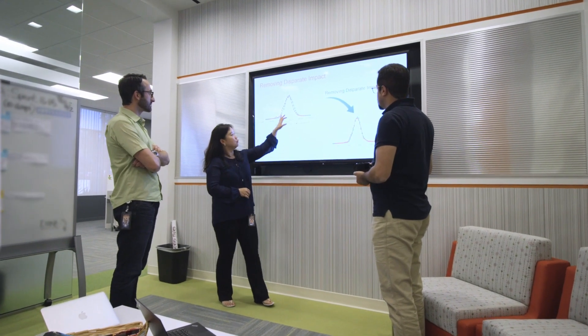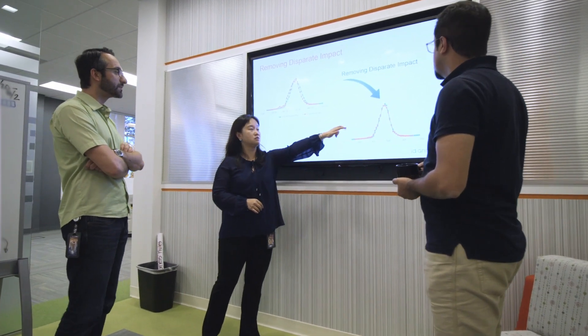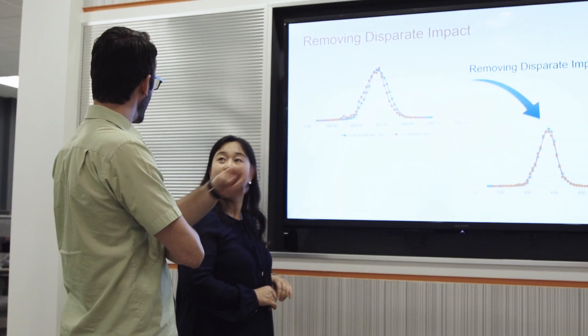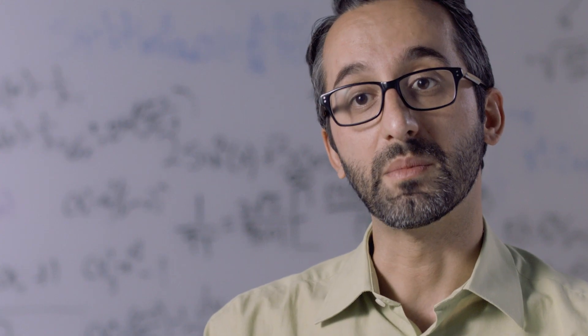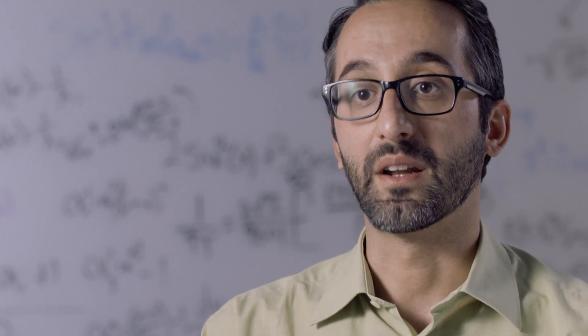One common way to solve this problem is to look at the model and select those attributes that are highly correlated with protected classes and remove them. But this will diminish your model performance and it's also a very long and manual ad-hoc process.